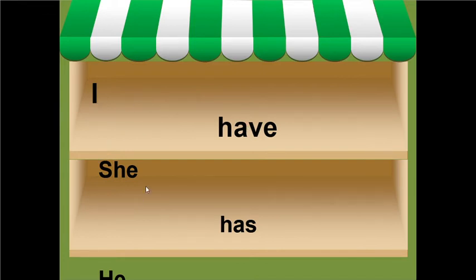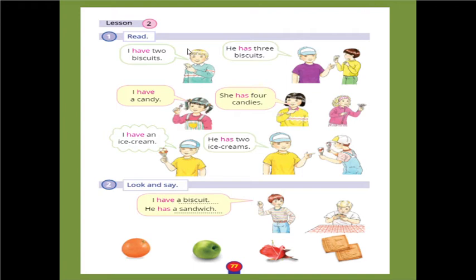Can you tell me what is this? It is an ice cream. Can you tell me what is this? It is candy. Very good! He has, she has — he when I talk about a boy, she when I talk about a girl. I have two biscuits, he has three biscuit packets. I have a candy, she has four candies. I have an ice cream, he has two ice creams.